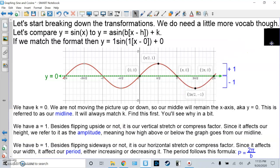Next, we go to a. a equals 1 in this case. Besides putting the picture upside down or not, it's our vertical stretch or compress factor. Since it affects our height, we refer to it as the amplitude, meaning how high above or below the graph goes from the midline. Last is b. b is 1. Besides flipping sideways or not, it's our horizontal stretch or compressed factor. Since it affects our width, it affects our period. The period formula is p equals 2 pi over b.